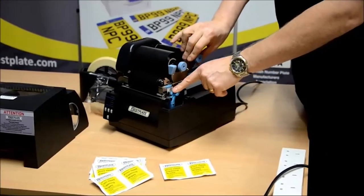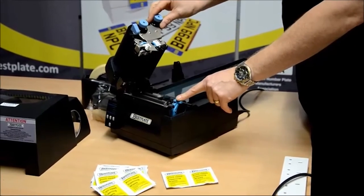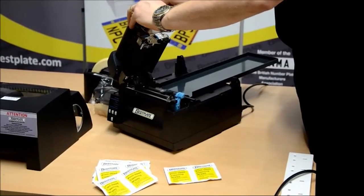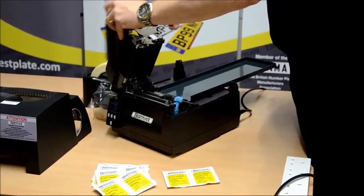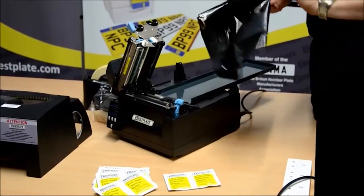To do that, press the bottom blue catch to lift up the carriage. Next, take hold of the two mandrills, lift them upwards and remove the ribbon from the printer.